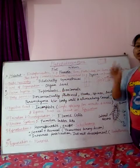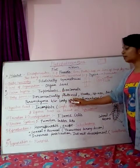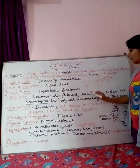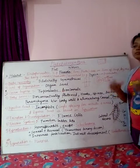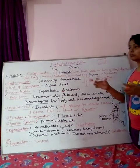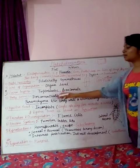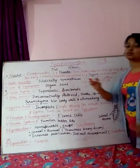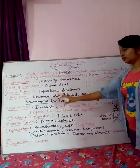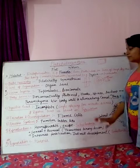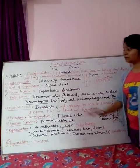Parenchyma is the specialized connective tissue found in between the body wall and the alimentary canal. This parenchyma is present to transport nutrients, so it serves a transportation purpose.